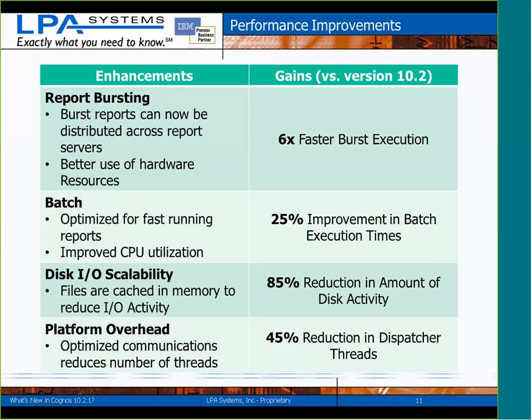Overall, from a batch report service perspective, there are improvements of about 25% in execution times because of some optimizations in the batch report service. Some additional file caching in terms of the overall architecture means there are fewer round trips to disk, which is far slower than round trips to memory, resulting in a large reduction in overall disk activity on your servers.